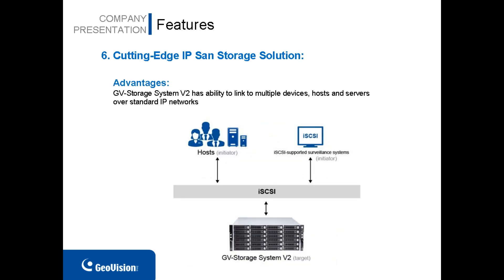Feature number six: cutting-edge IP SAN storage solution. Through the iSCSI protocol, in addition to its ability to link to multiple devices, hosts, and servers over standard IP networks, GV Storage System v2 can also be scaled and used by any type of network and combination of operating systems supporting iSCSI, as well as protected by security and multi-path mechanisms.